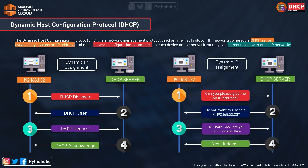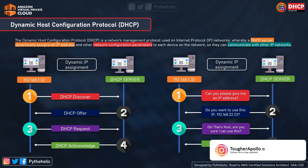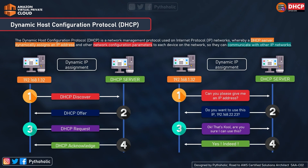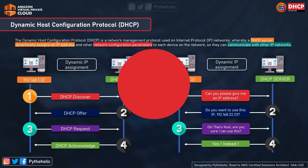In simple terms: the host asks, 'Can you give me an IP address?' The DHCP server says, 'Do you want to use 192.168.22.23?' The host says, 'Okay, are you sure I can use this?' Then the server acknowledges, 'Yes, you can use it.' This is how the DHCP server and client communicate — it's that simple.